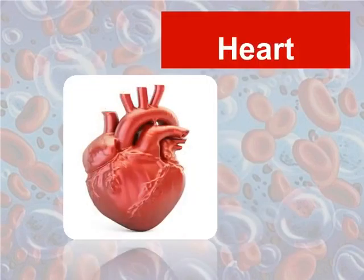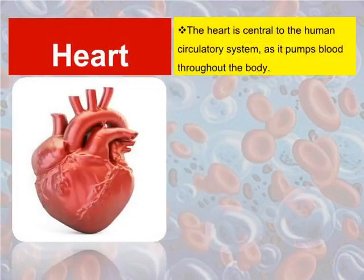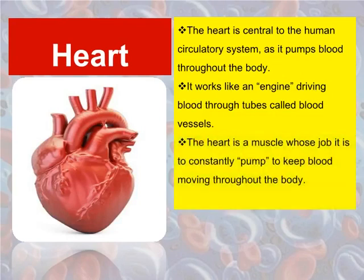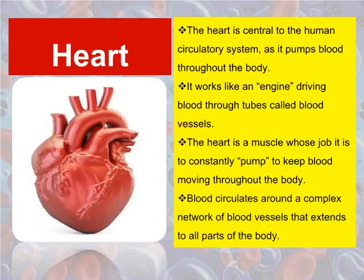Heart. The heart is central to the human circulatory system as it pumps blood throughout the body. It works like an engine, driving blood through tubes called blood vessels. The heart is a muscle whose job it is to constantly pump, to keep blood moving throughout the body. Blood circulates around a complex network of blood vessels that extends to all parts of the body.